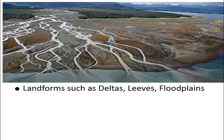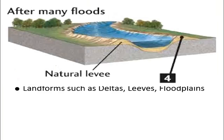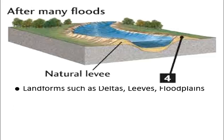We also find in the lower course landforms which we call levees. This usually happens when the river is at its highest water level and overflows the banks. When that happens, it takes some materials — sand and silt carried within the river — and as the water level lowers down, some of these materials do not make it back to the river channel and are deposited on the sides. When that builds up over time, that is what we refer to as levees.